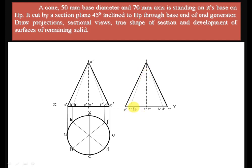In the top view, the extreme points visible in the left side view are G and C, giving G'' and C'' in the left side view. H and F lie at the same point, giving H''F''. A and E lie at the same point, giving A''E''. B and D lie at the same point, giving B''D''. This is the naming convention for the left side view.